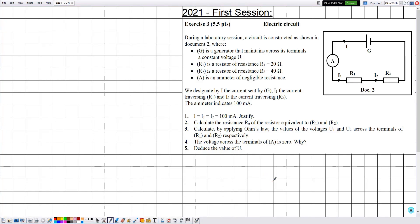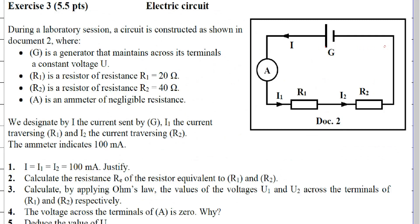Hello everyone. In this new video we are going to solve an exercise related to electricity, in the chapters of DC voltage and resistors. This exercise was from the previous exams, 2021 first session, exercise number three. The title is 'Electric Circuit.' During a laboratory session, a circuit is constructed as shown in document 2. Generator G is a generator that maintains across its terminals a constant voltage U — this is a DC source.